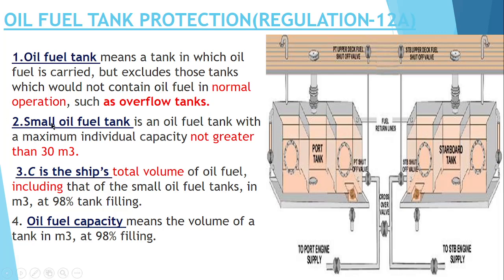The second definition is the small fuel oil tank. If the aggregate capacity is less than 30 cubic metres — meaning if the total capacity is less than 30m³ — it will be considered as a small oil fuel tank. C means the total volume of the oil fuel which will be carried, including the small fuel oil tank.